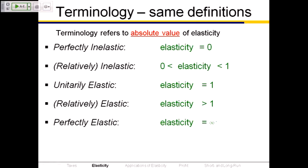And there's that middle case of unit elasticity that we rarely see but have to define. Notice that if the price elasticity of demand is between 0 and 1 — since elasticity is the percentage change in quantity demanded divided by the percentage change in price — relatively inelastic demand means the percentage change in quantity demanded is smaller than the percentage change in price in absolute value. So when price goes up a lot, there's not a very big drop in quantity demanded.